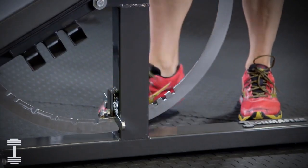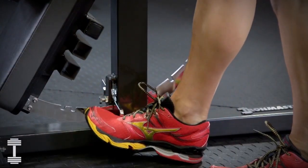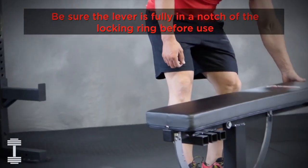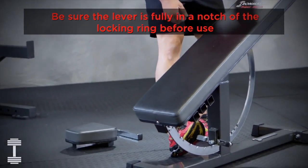You can operate the foot lever from either side of the bench to change the angle. Just lift up or push down on the lever to rotate.